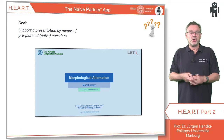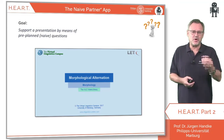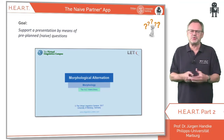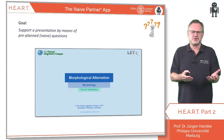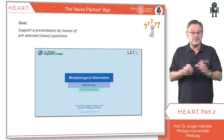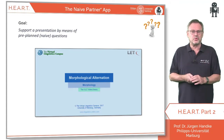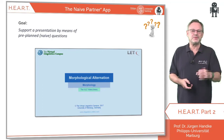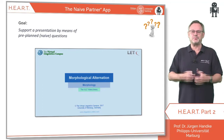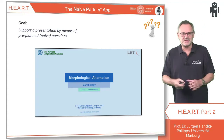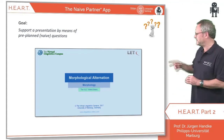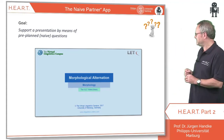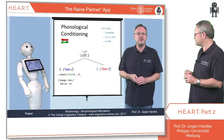A further app uses the naive potential of the robot for didactic purposes. It is often essential to ask simple, even naive questions, whereas humans would be reluctant to do that. Robots have no problems doing that, and that's why we can employ them in such a way — in presentations and, as we will see here, in educational videos.